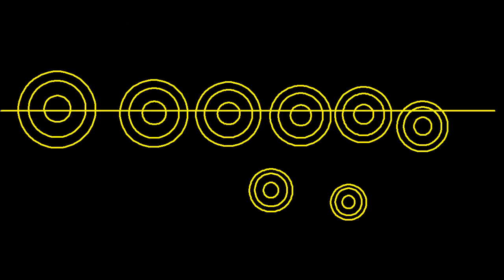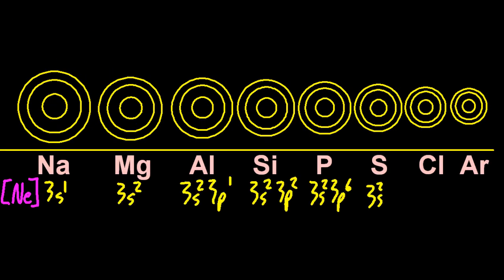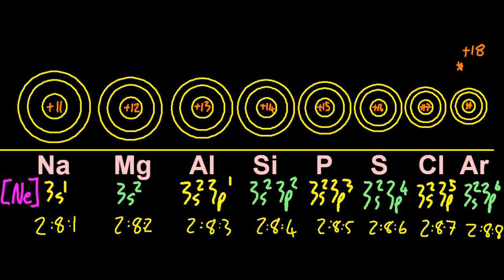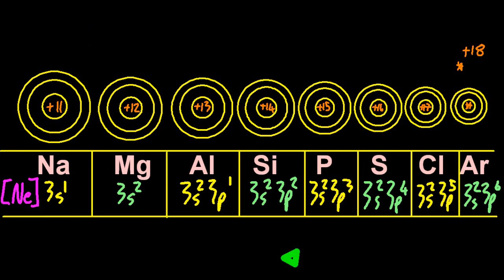So as you go across a period adding a proton and electron each time and probably a neutron too, paradoxically the atoms get smaller as you add stuff. So let's examine that.